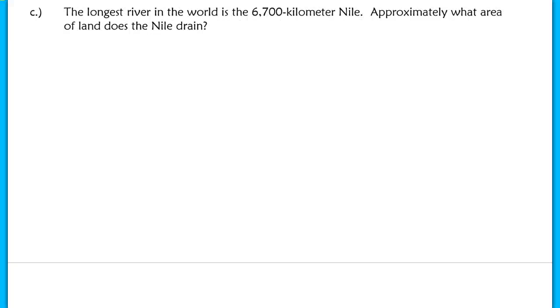Part C is a little bit trickier, because in this case, they give you the length. They say the longest river in the world is 6,700 kilometers, so we're going to write length is 6,700 kilometers. Approximately, what area of land does the Nile River drain? So we want to find an area. If I just plug it right into our function, we have 6,700 equals K times A to the 3/5. K is not a variable. We know this value, it's stored already. If I divide out K, this is a known value, it's not a variable, I'm left with A to the 3/5. The reason why I said this problem was tricky is because some of you forget how to solve for A and how to isolate A.